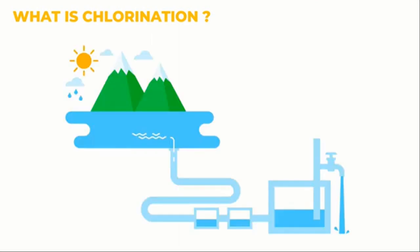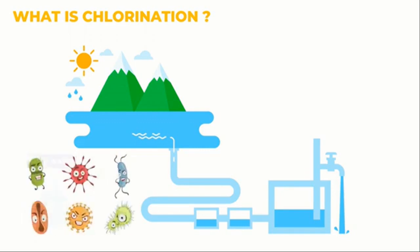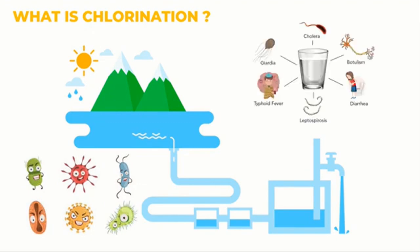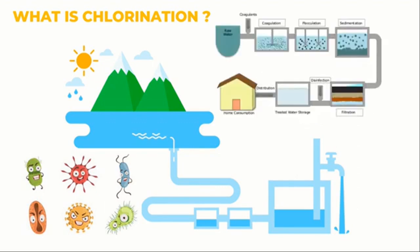River, lake, and groundwater raw water can include bacteria. Even though not all microbes are dangerous to human health, some of them have the potential to make people sick. Waterborne diseases can be contracted by consuming water when pathogens are spread through a drinking water distribution system. Water that is safe for human consumption is produced by procedures like coagulation, sedimentation, filtration, and chlorination.